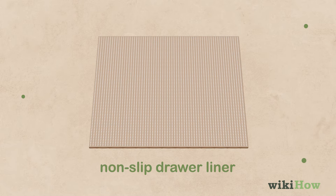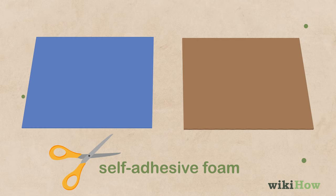Next, cut out a sheet of self-adhesive foam padding that's the same size and shape as the cardboard.